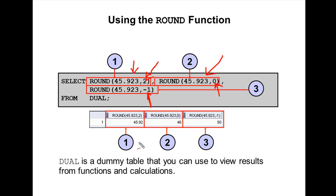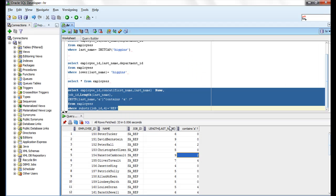When we use minus 1, the value is rounded to 1 decimal place to the left. So here we are getting 4.52 for the first one, 46 for the second, and 50 for the third. There is also a table called DUAL — this is a dummy table that we can use to view results from functions and calculations.